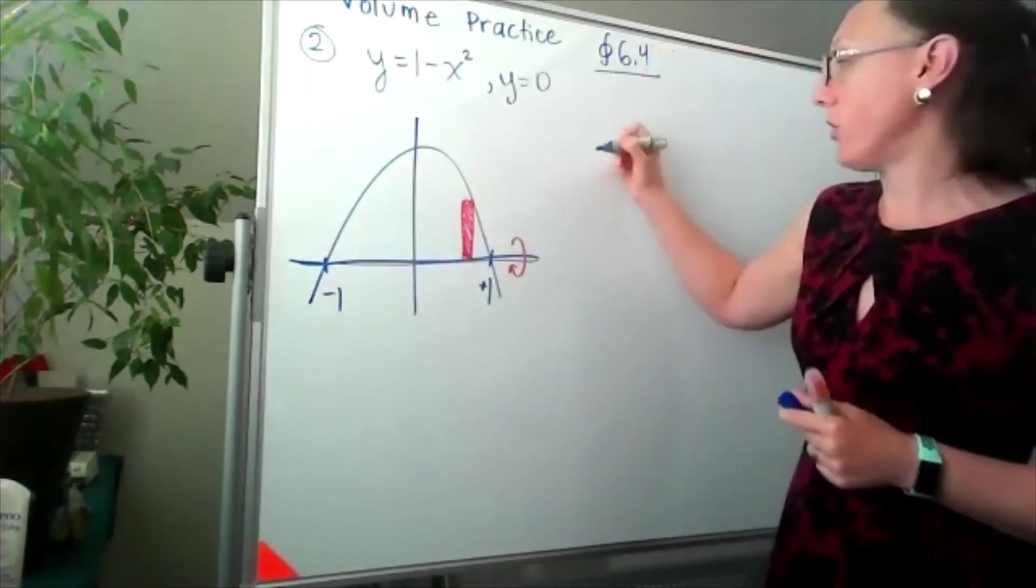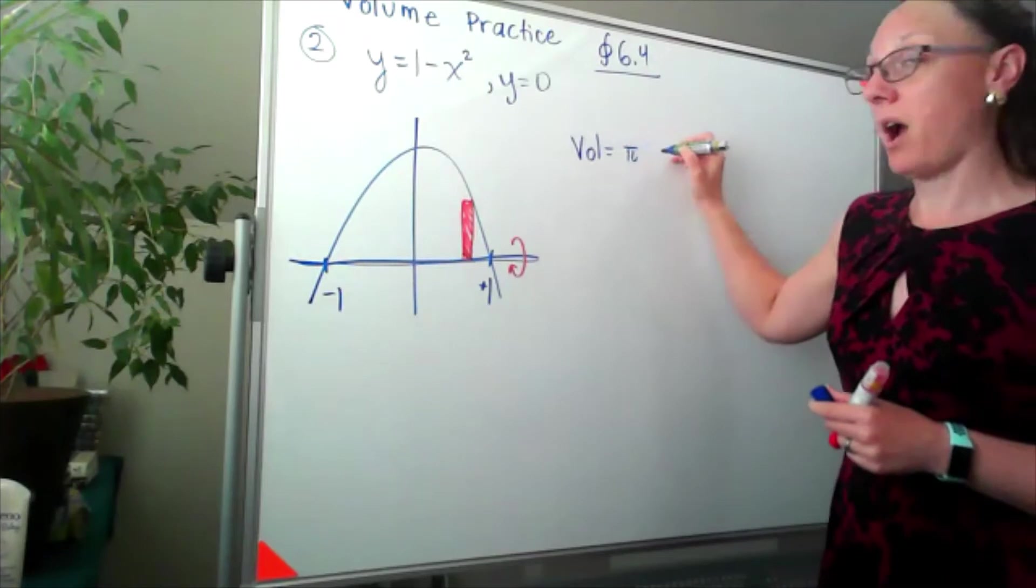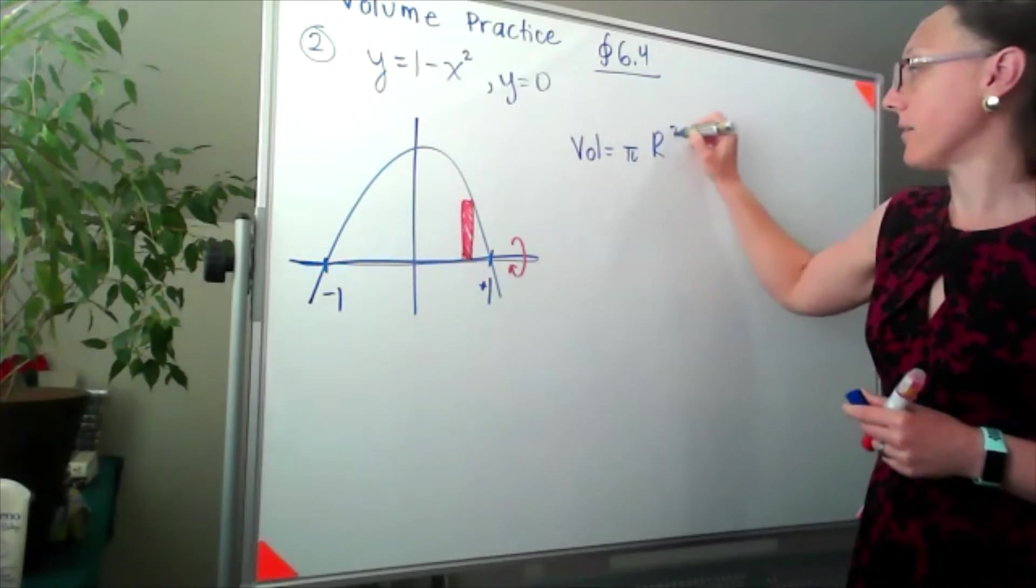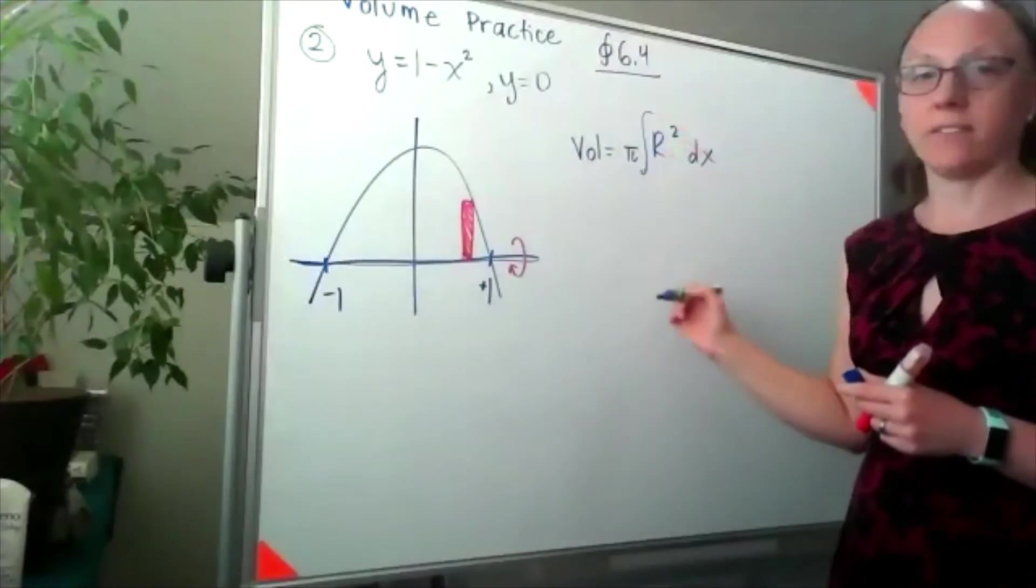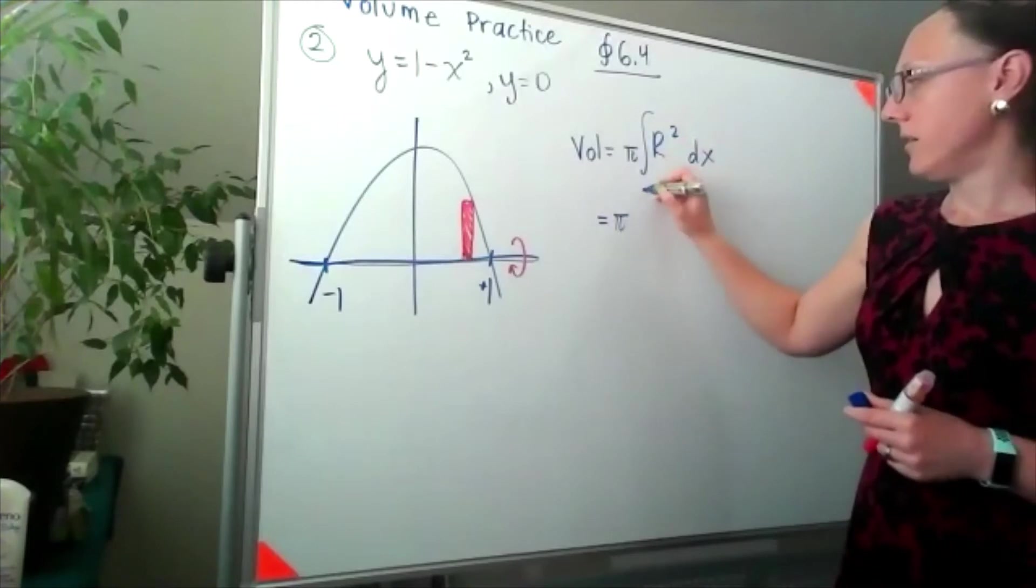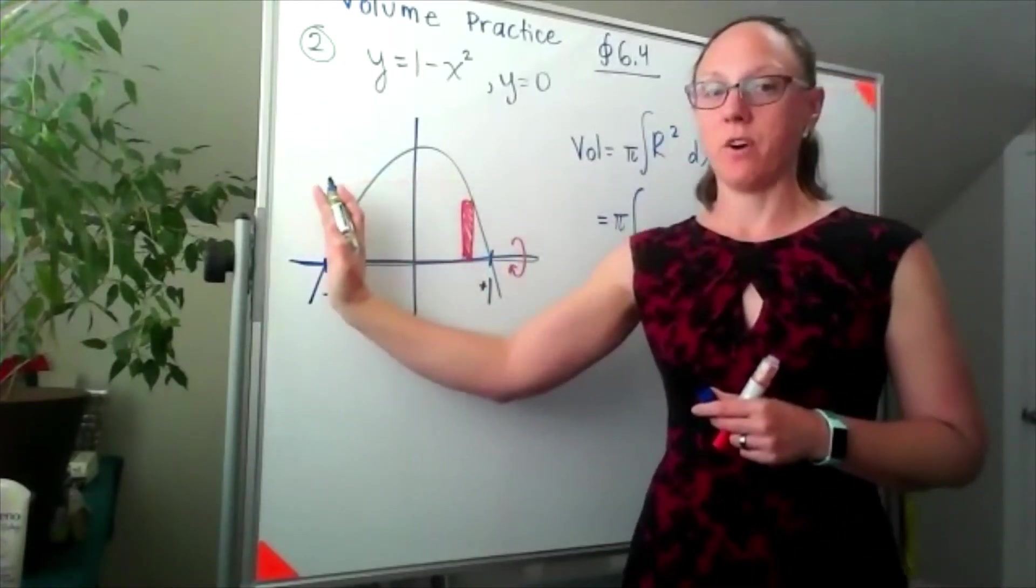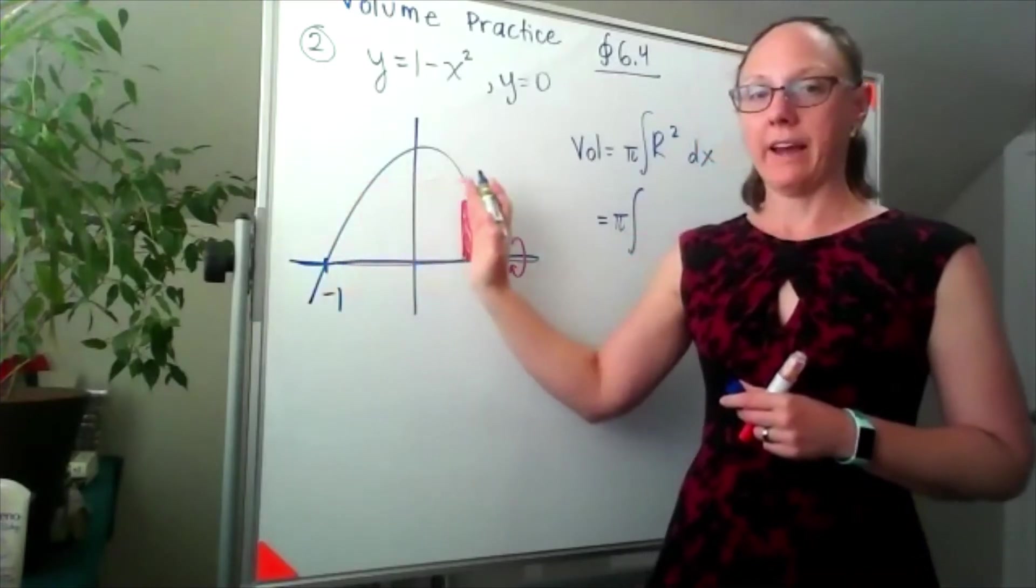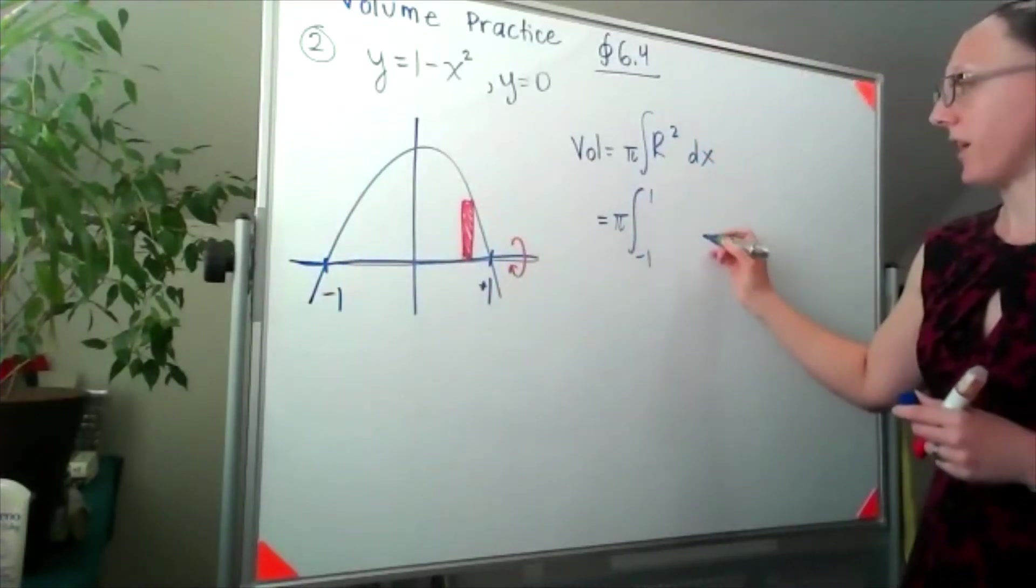So I know that our volume equation is going to look like pi r squared dx, and then we'll be adding those up calculus style. I already know that I'm going to take those slices as far to the left as negative one and as far to the right as positive one. So I've got my bounds for the integral.